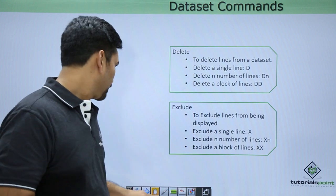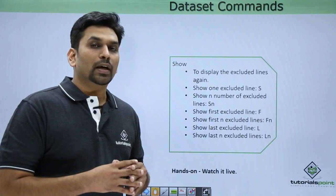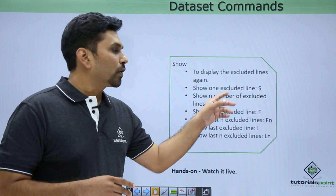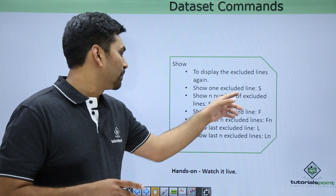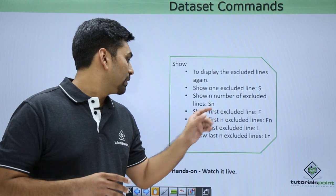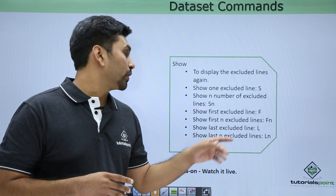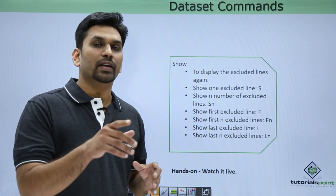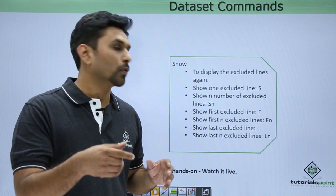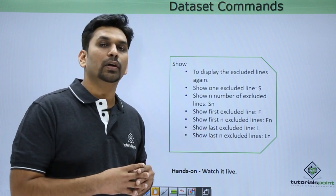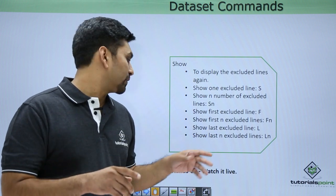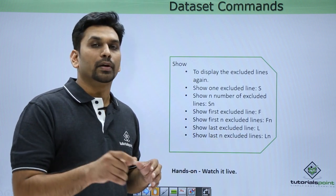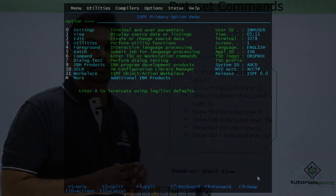To show excluded lines again, use the show command. To display one excluded line, type S. To show N excluded lines, type Sn. To show only the first excluded line, type F. To show the first N excluded lines, type Fn, where N can be any number like 5 or 10. To show the last excluded line, type L in the line number area, and to show the last N excluded lines, type L followed by a number.